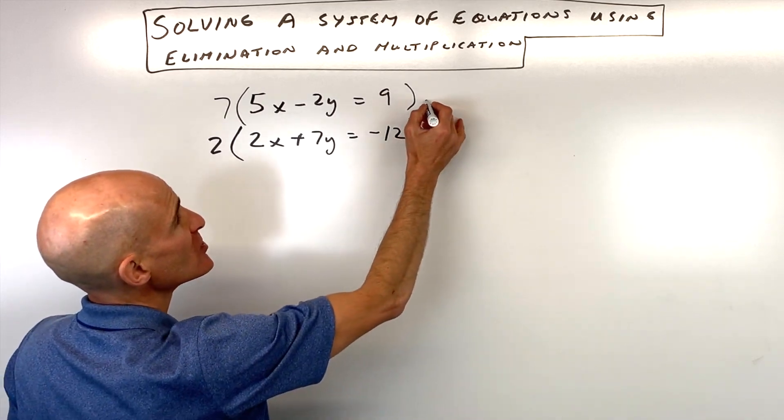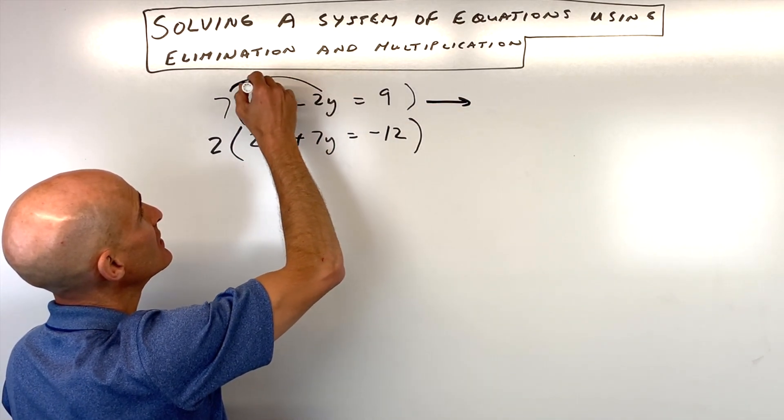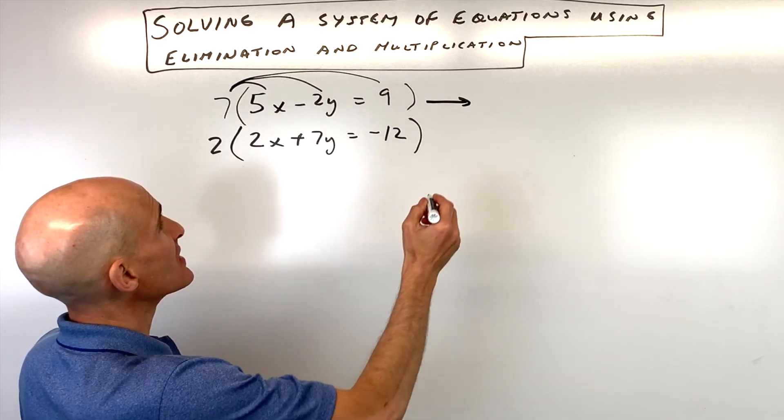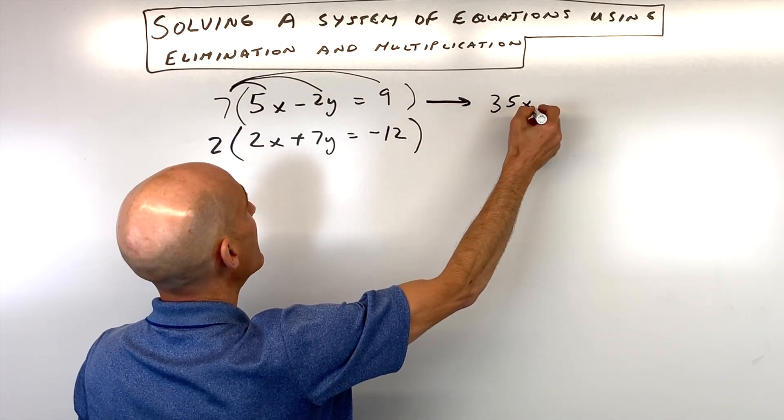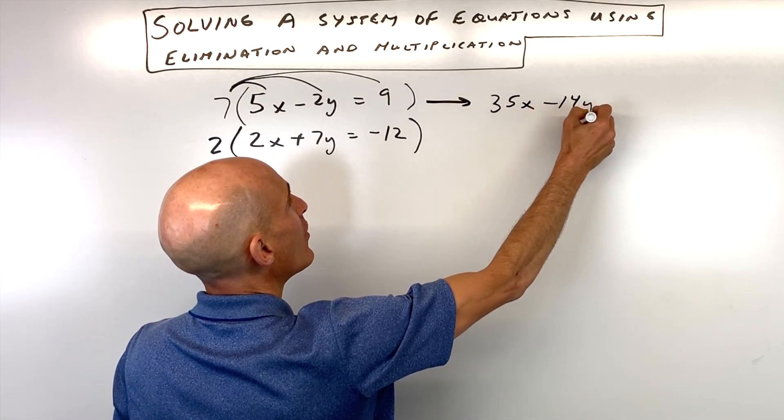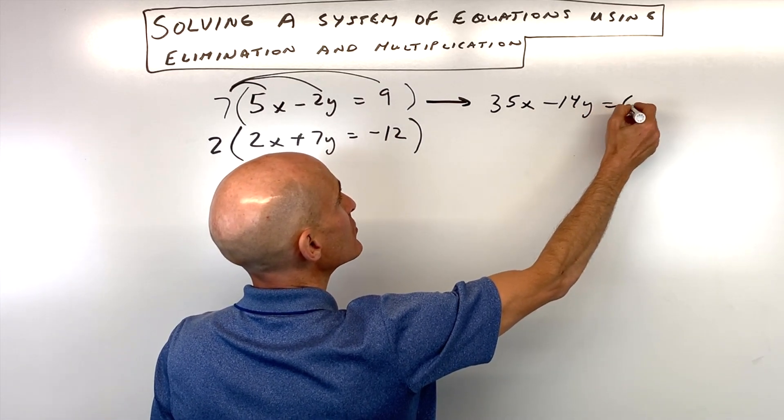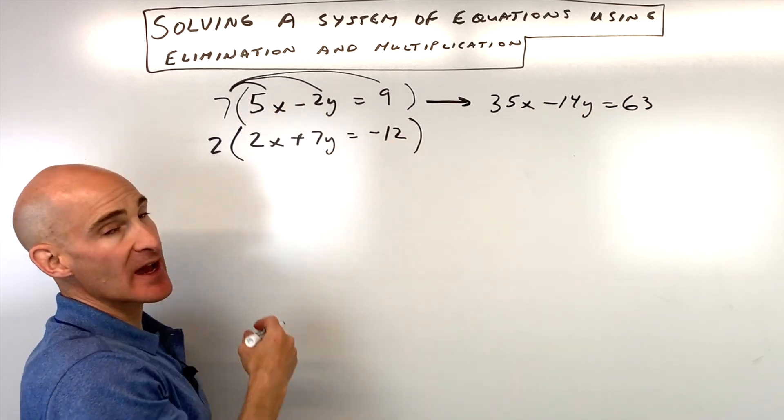So let's go ahead and write the result of that. When we multiply by 7 I'm just distributing 7 to the left and right sides of this equation. That's going to give us 35x minus 14y equals 63. Now it doesn't matter if you eliminate the y's or the x's.